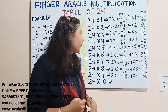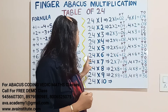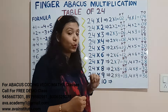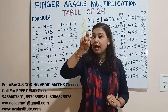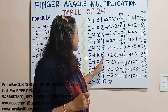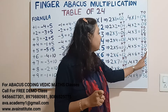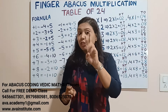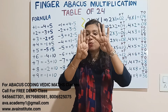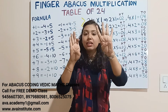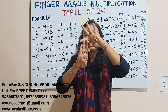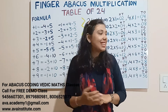Next, 24 sixes are: 2 sixes are 12 — in hundreds 1, in tens 2. We represent 1 in the hundreds place and 2 in the tens place. Now 4 sixes are 24 — in tens place we add 20, in ones place we add 4. So the answer is 144 — that is 100 plus 40 plus 4, so 144.